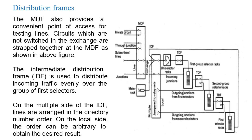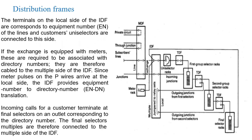The intermediate distribution frame (IDF) is used to distribute incoming traffic evenly over the group of first selectors. On the multiple side of the MDF, lines are arranged in directory number order. On the local side, the order can be arbitrary to obtain the desired result.